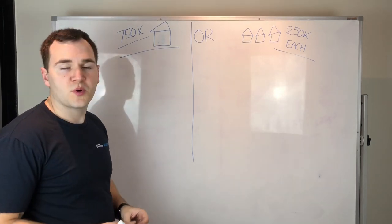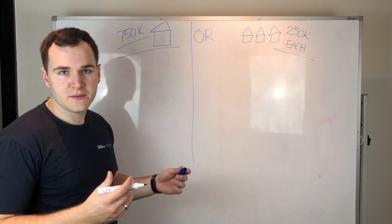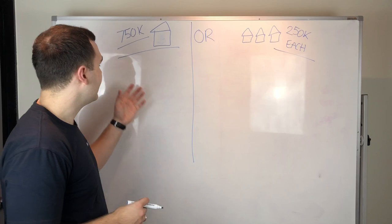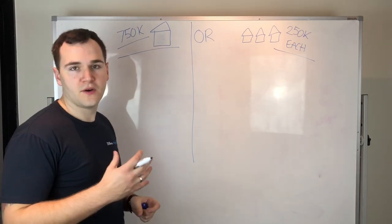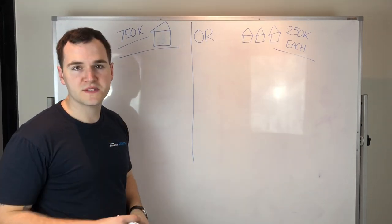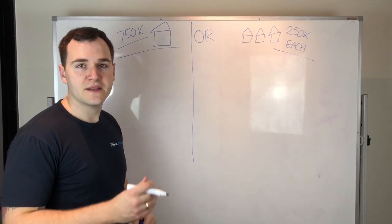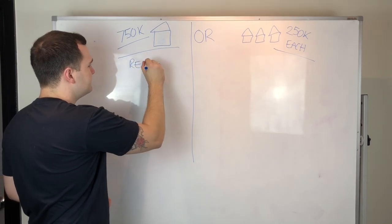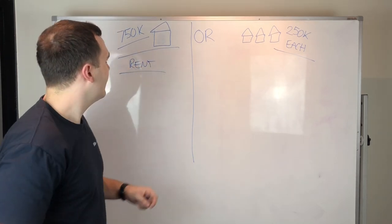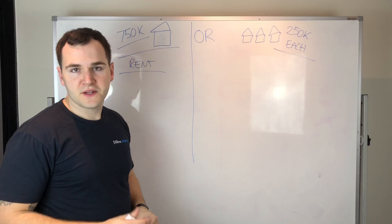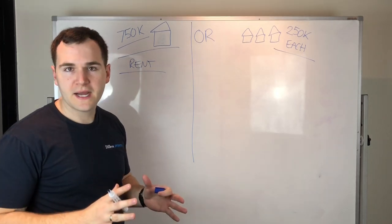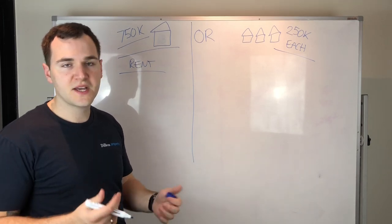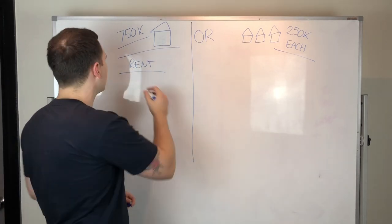If you do buy a $750,000 property, you could be looking at a major capital city within Australia, maybe a blue collar area. The problem I have with this scenario of buying just one property for $750,000 is that rental yield. The property for $750,000 will probably only rent out, depending on what market it is, for $500 a week, sometimes $450, sometimes $600.